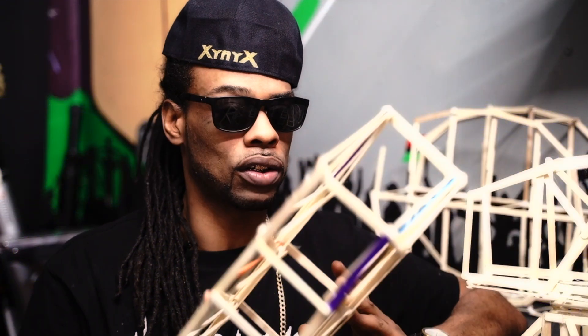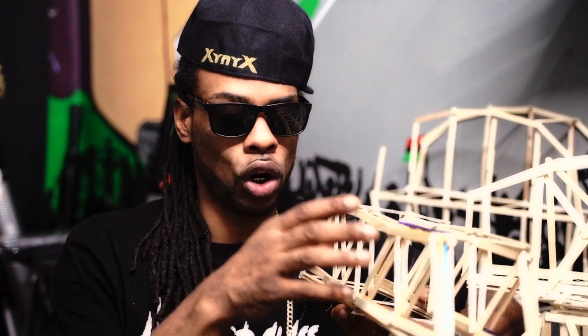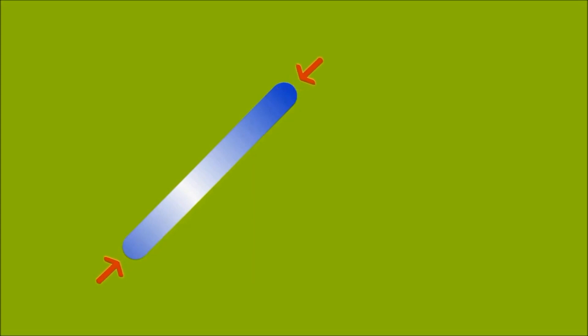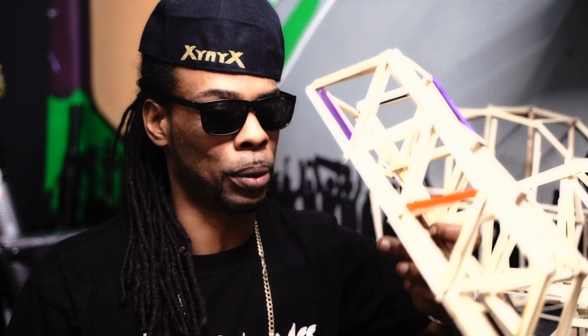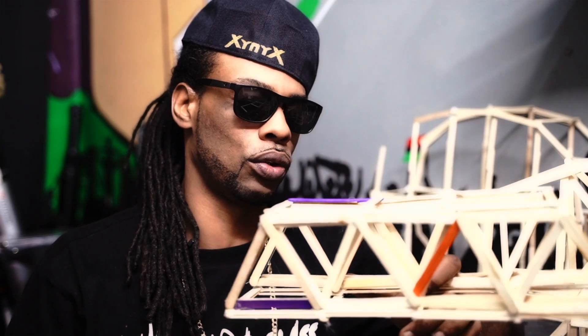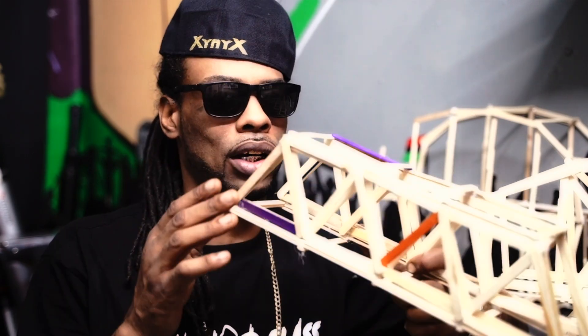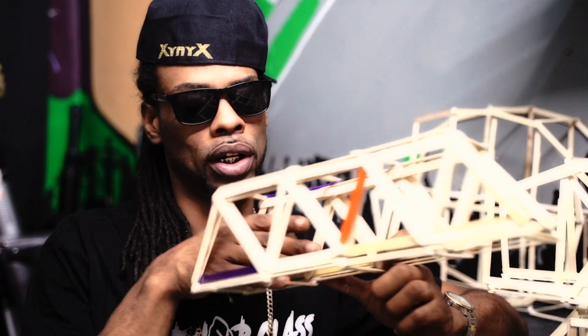Another thing to remember with truss bridges: the load is only applied to the endpoints of the members. You will never have a load acting on the middle of a member in a bridge — that is just not the purpose. The weight will always be on the deck or on top of the deck, but never on one of the members.